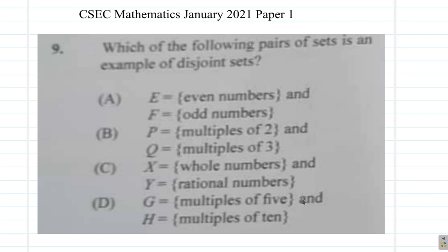Which of the following pairs of sets is an example of disjoint sets? Let us see what's going on here. E: even numbers and odd numbers. B says multiples of 2 and multiples of 3. A multiple of...